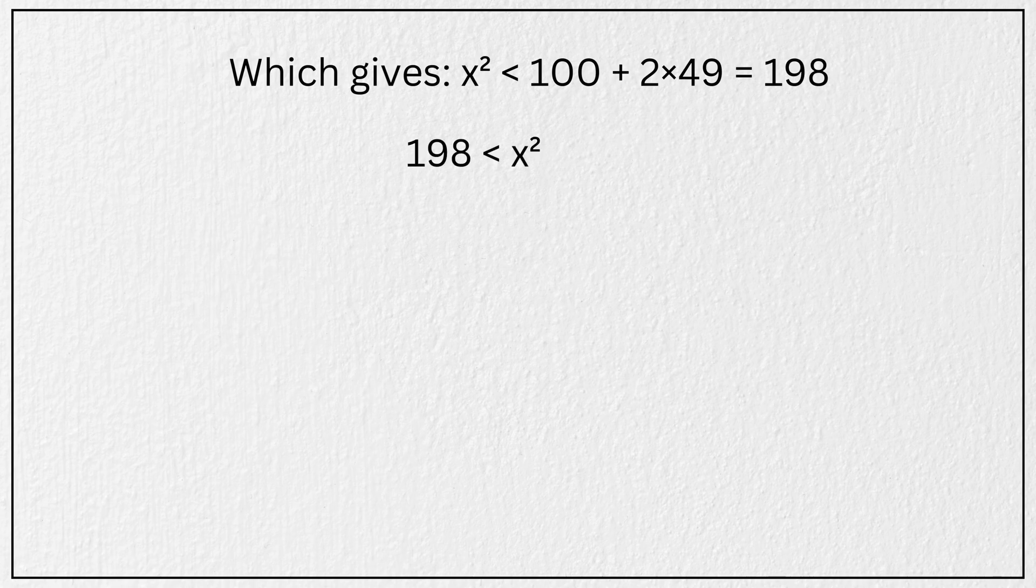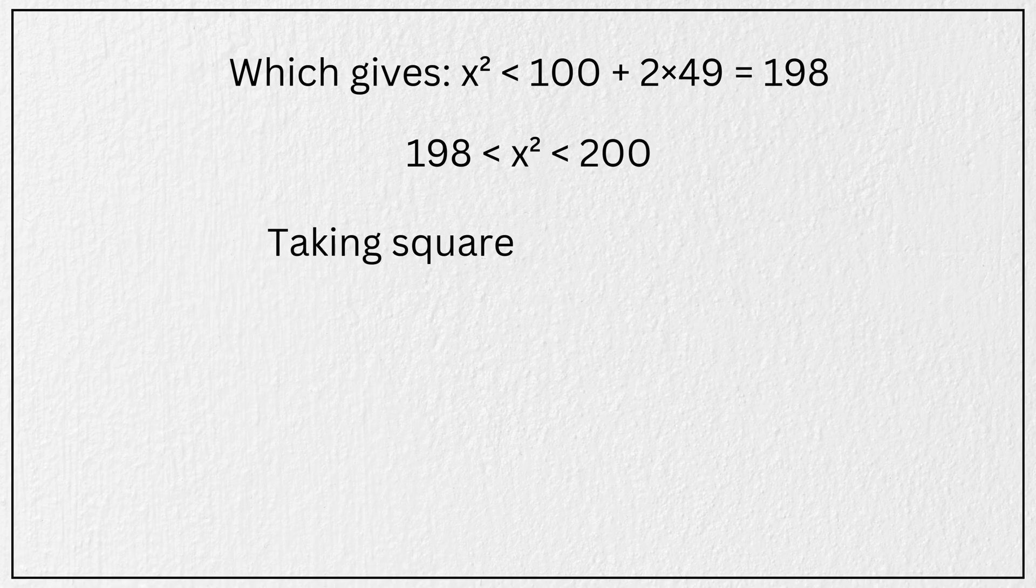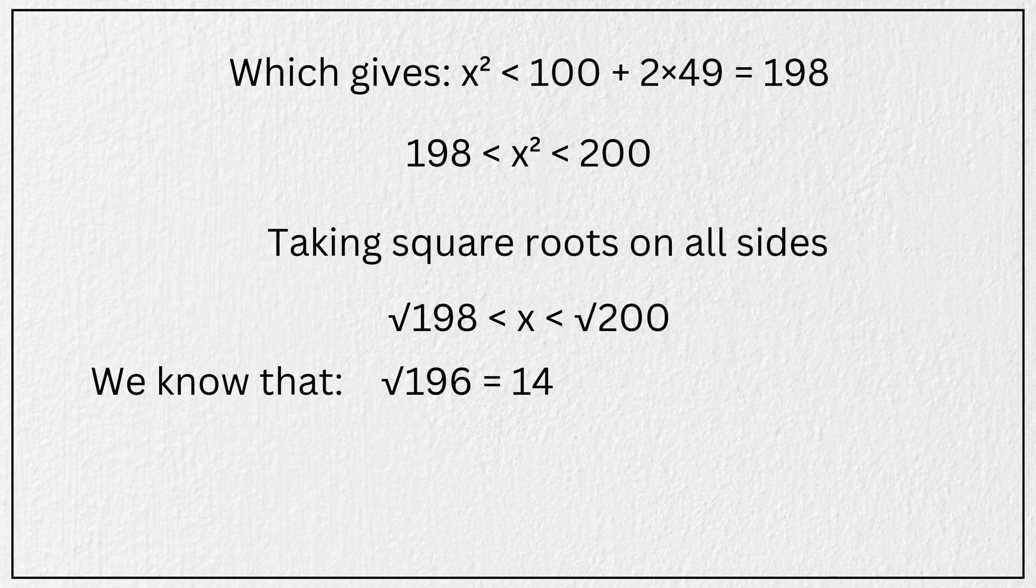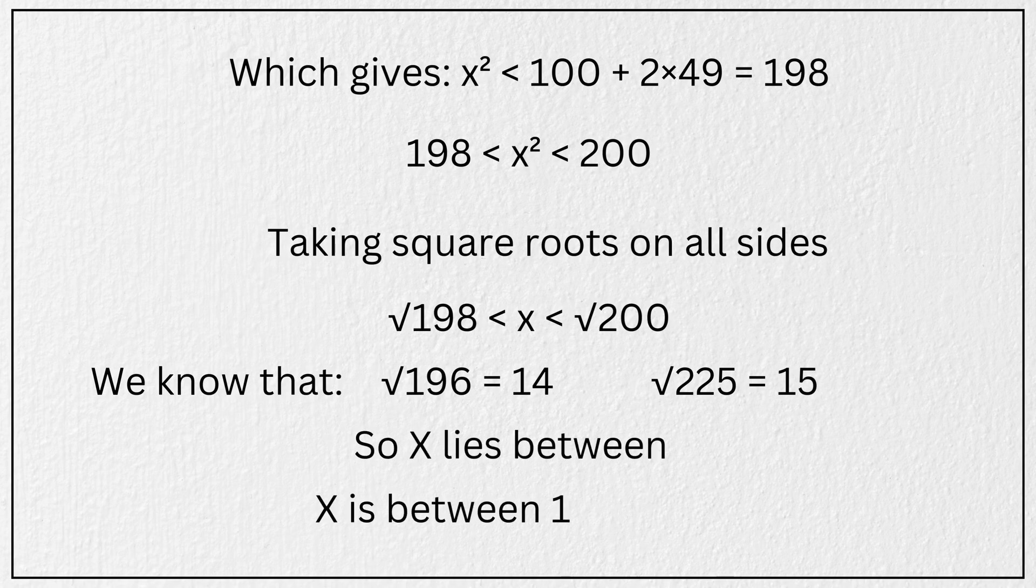So we have 198 < x² < 200. We know that √196 = 14 and √225 = 15. So it follows that x is between 14 and 15.